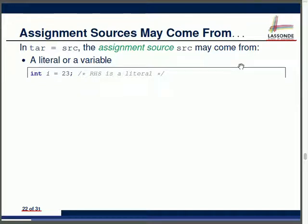When we say integer i with initial value 23, the right-hand side is a literal. For the second line, integer j is assigned to i. Think about what this means: the source is i, the target is j. We're always trying to store the source value into the target.